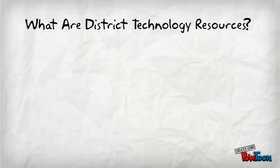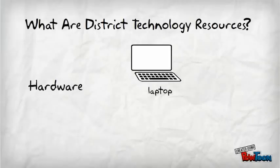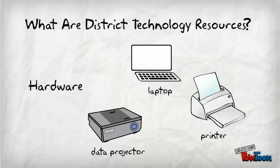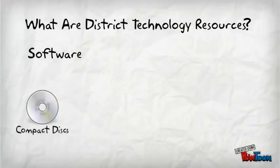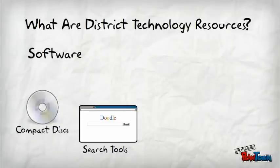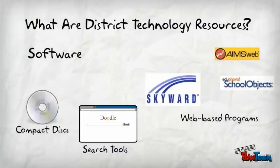Throughout the acceptable use policy, the term technology resources is mentioned. So what are technology resources? They include hardware like laptops, data projectors, and printers, as well as software in the form of compact disks, online search tools, and web-based products.